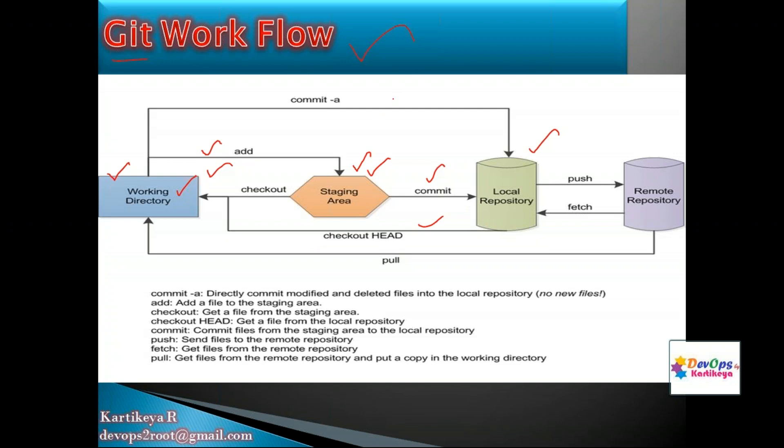When you work locally, you can push to the remote repository. From working directory, you add code to staging or index area, then commit to the local repository. Committing creates a record locally, not on the server. When you're ready, you commit your changes with a message describing the modifications.